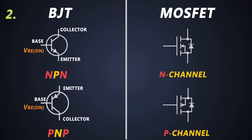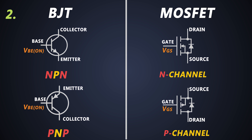MOSFETs have Gate, Drain, and Source. In MOSFETs, we provide a signal to the Gate and current starts flowing from the Drain to the Source.